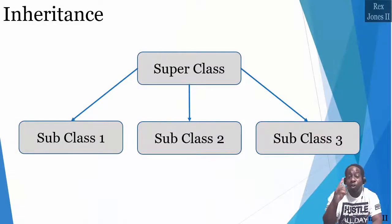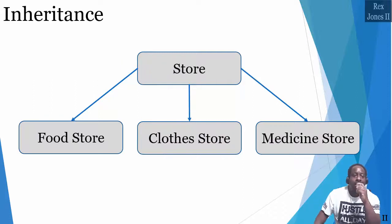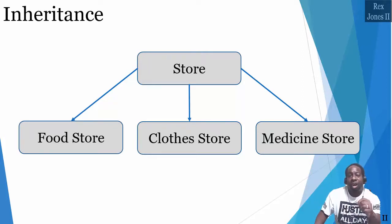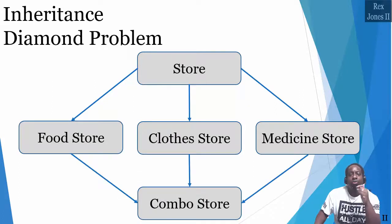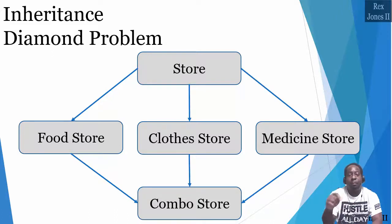In this diagram, we see one superclass and three subclasses. Each subclass inherits the superclass. Using a store example, Store is the parent class, while food store, clothes store, and medicine store are the child classes. With inheritance, there is no way to combine all stores into one combo store — it is impossible because we are not allowed to extend more than one class. This is called a diamond problem.